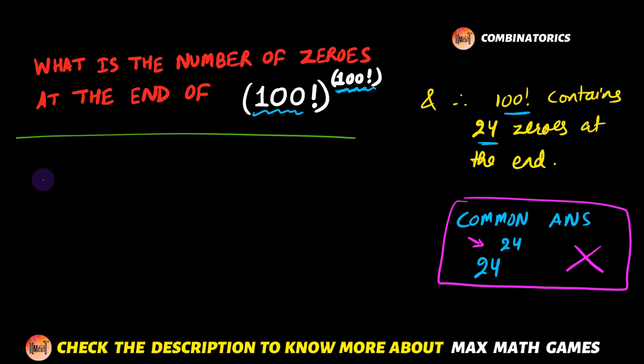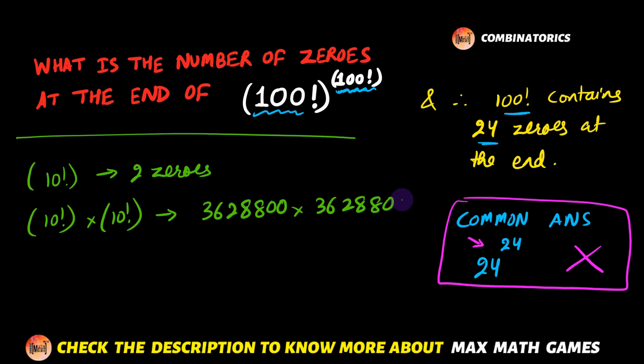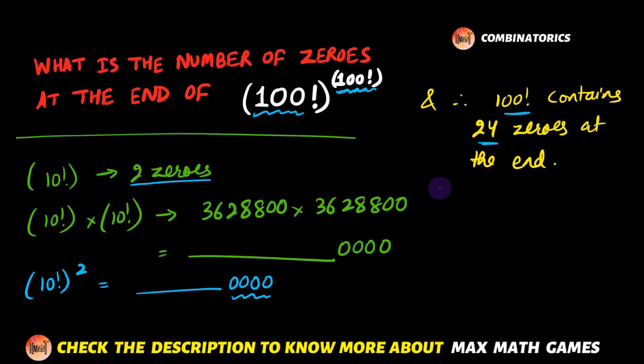Now for the answer, we observe that if 10! contains two zeros, and if I multiply 10! by another 10!, then this will be 3,628,800², and hence this will be some quantity followed by four zeros. So what happens is if I raise the power of 10! by 2, then the number of zeros is multiplied by 2—instead of two zeros, now we have four zeros.